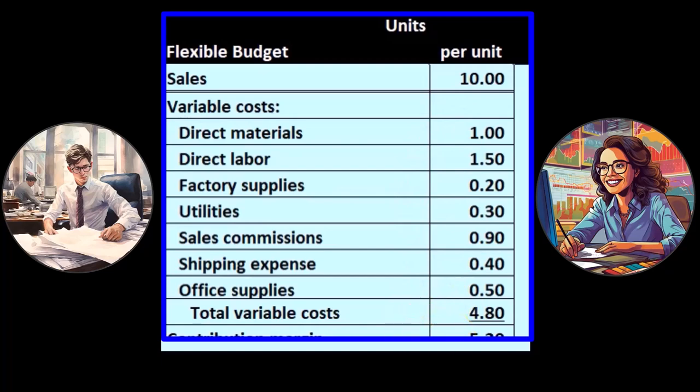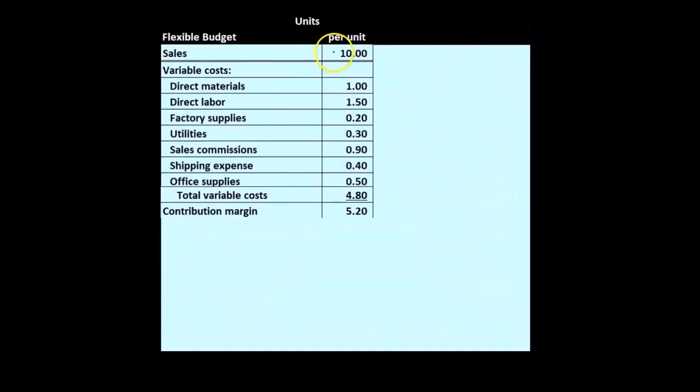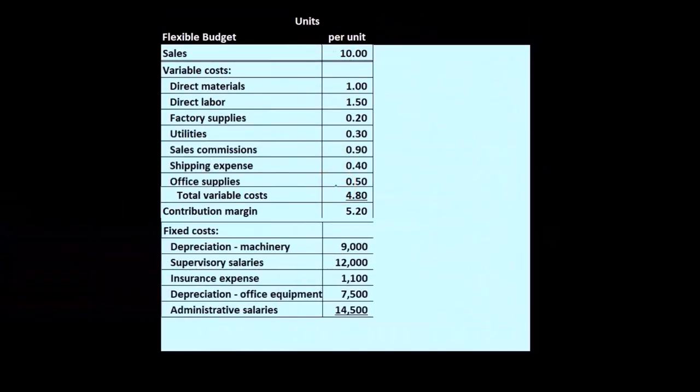The contribution margin per unit is 5.2—that's the 10 minus the 4.8. The fixed costs then will be fixed; these will not change as the level of production goes up. If we take a look at different production levels, starting off with the one that we budgeted...